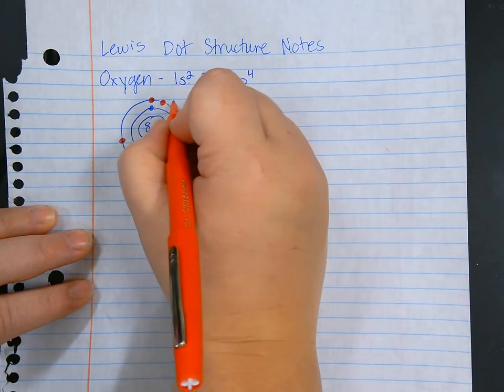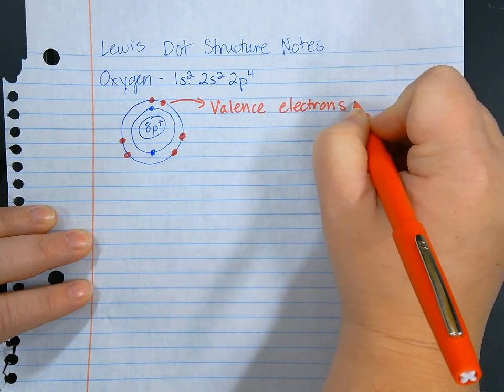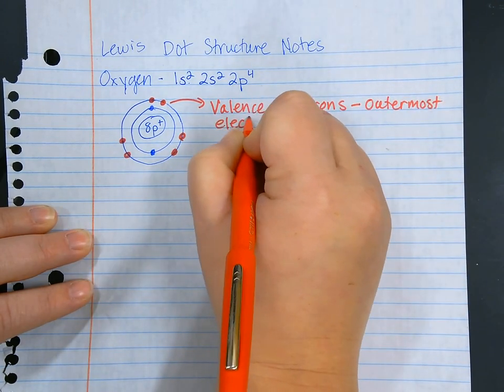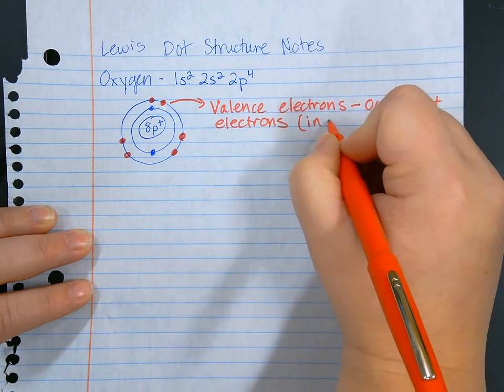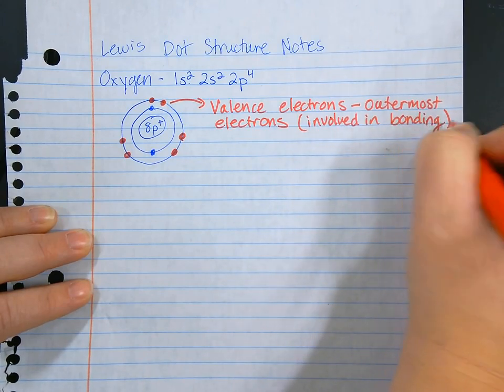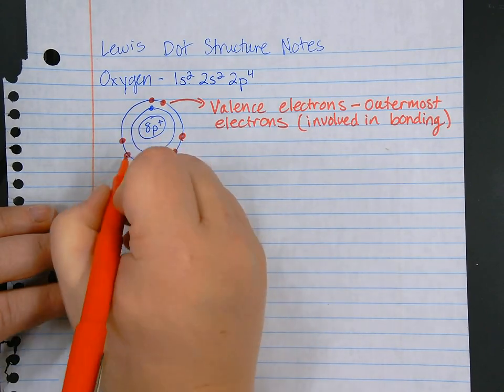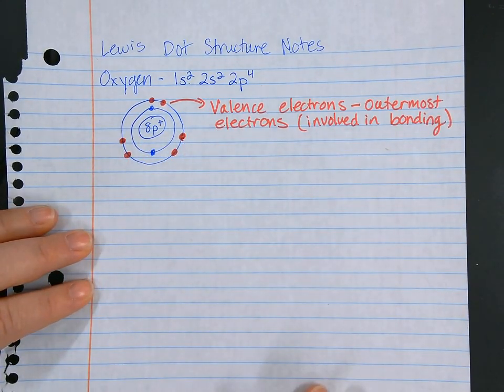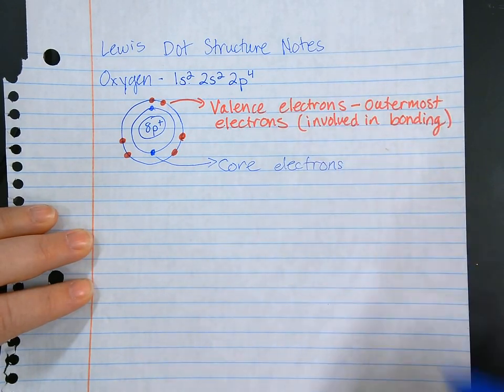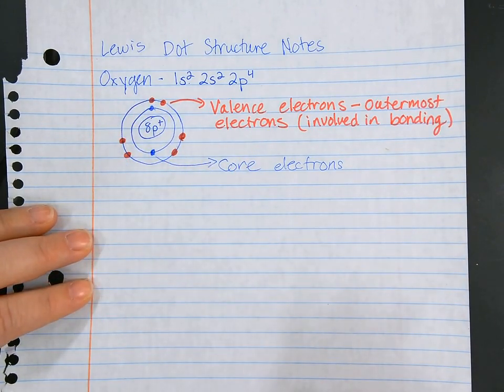We're making these a different color because these are what are known as valence electrons. Valence electrons are the outermost electrons in an atom, and we care about them because they are involved in chemical bonding. All the chemical reactions we have, all of that stuff that occurs with atoms in chemical reactions, it's these valence electrons that control all of that. The other electrons, the blue ones here, we call core electrons. Those are just in the core of the atom. You can have multiple energy levels of core electrons; only the last energy level is going to be our valence electrons.